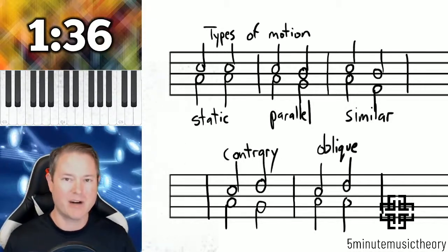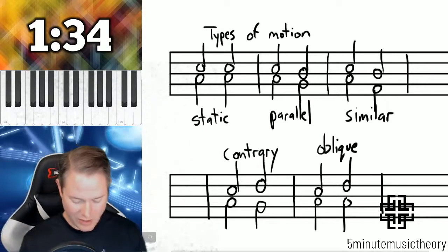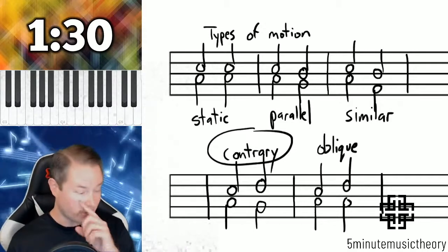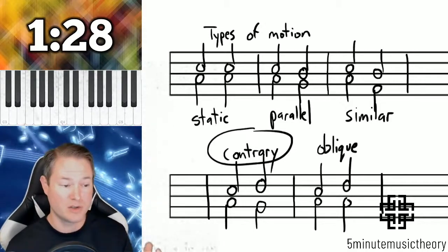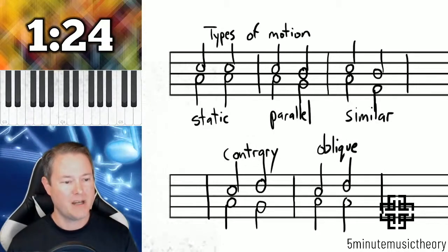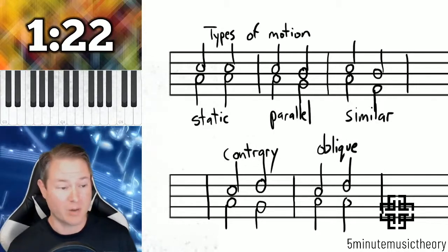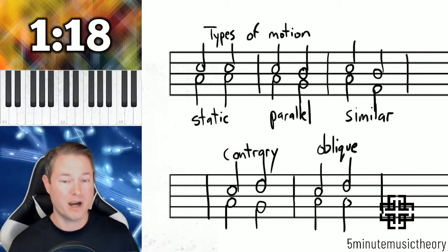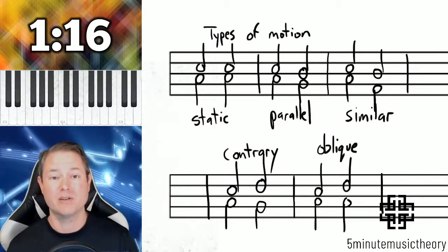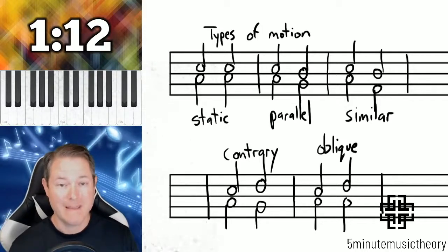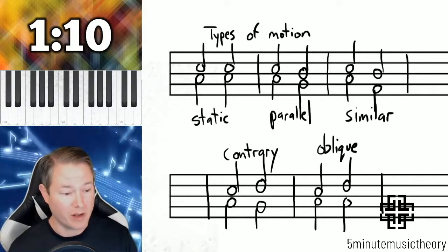There is a hierarchy here of strong to weak. The strongest type of motion is actually contrary motion, because contrary motion makes things interesting and usually will help to alleviate some common errors. The others are not bad. Similar motion is quite good actually, and parallel motion can be good, but you'll see in a video soon to come, one of the major errors that you learn about in the first semester of music theory is about forbidden parallels, and it has to do specifically with parallel motion.